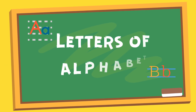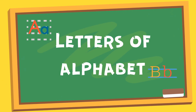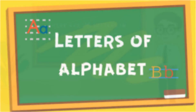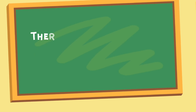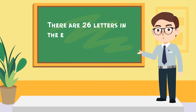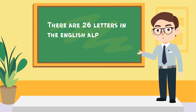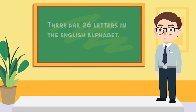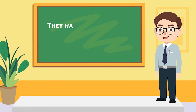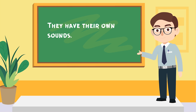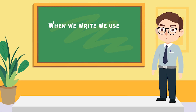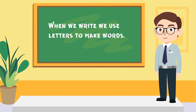Letters of the English Alphabet. There are 26 letters in the English alphabet. They have their own sounds. When we write, we use letters to make words.